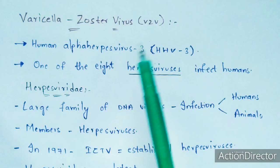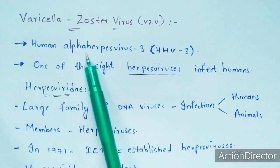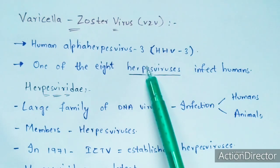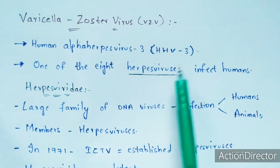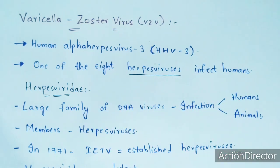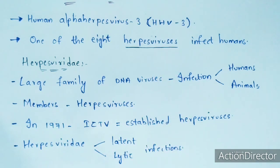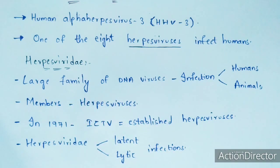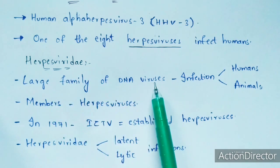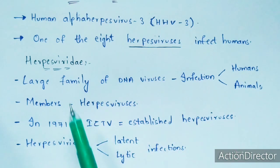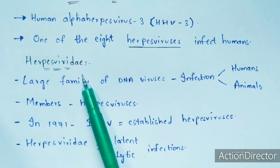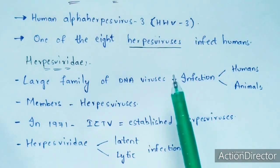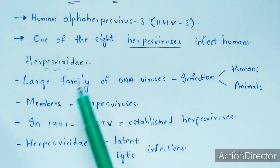The VZV is also referred to as human alpha herpesvirus 3 (HHV3), and it is one of the eight herpesvirus infections. To understand this, you need to know about Herpesviridae. Herpesviridae is one of the large families of DNA viruses — where family is one of the biological classifications like phylum, class, family, order, and species. This family of DNA viruses causes infection in both humans as well as animals. The members which belong to this Herpesviridae family are called herpesviruses.